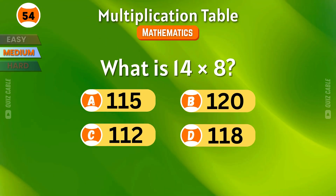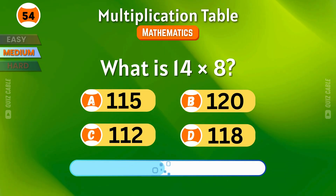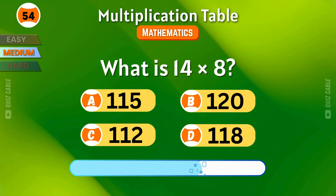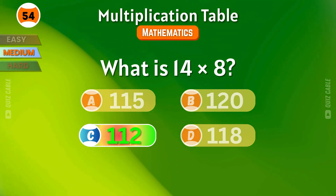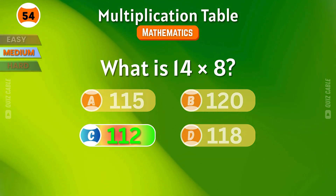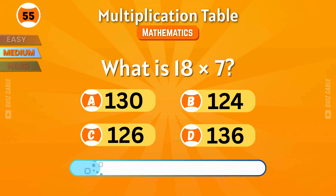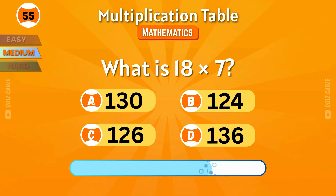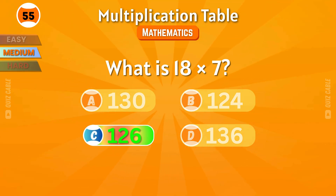What is 14 times 8? That makes 112. What is 18 times 7? The answer is 126.